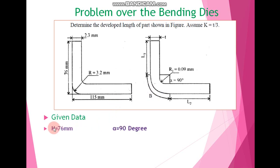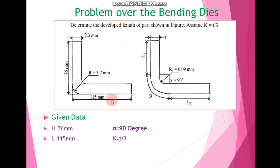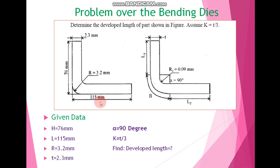The given data: capital H represents 76 mm, which is the vertical height of this part. Capital L represents the horizontal length of 115 mm. Capital R is given as 3.2 mm. The thickness t of this part is given as 2.3 mm, and the angle alpha is given as 90 degrees.